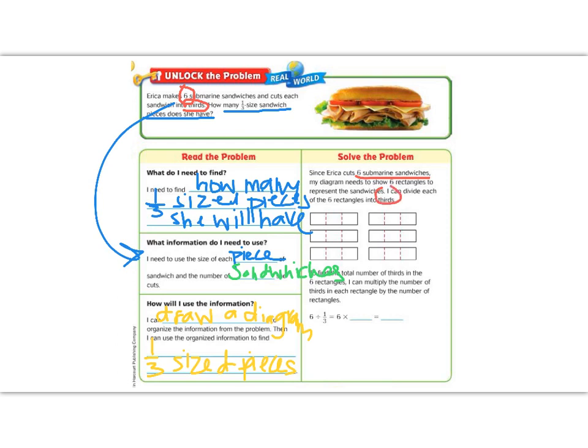So that means that I've split each rectangle into three pieces. So one, two, three in each piece. So if I do that to every single one of my sandwiches, then I need to know how many pieces I will have.